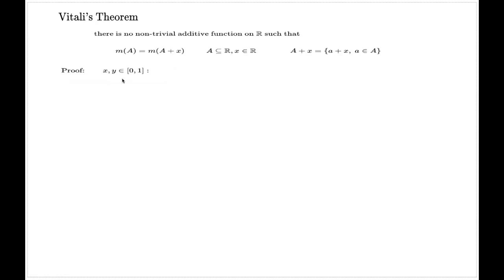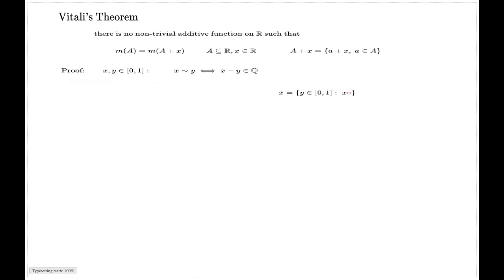First I need to give some preliminary information on what is called equivalence relations. If I have two points x and y in [0,1], I will call them equivalent and write x tilde y if and only if the difference x minus y is a rational number. This is what is called an equivalence relation. Now I introduce the set x-bar, which is the set of all points from [0,1] equivalent to the given point x.